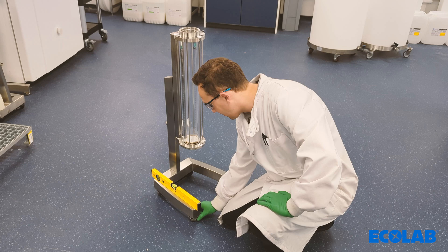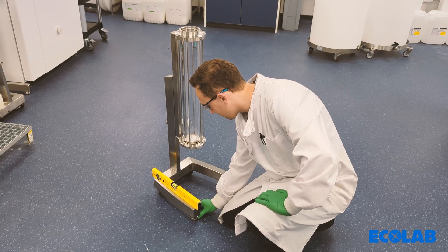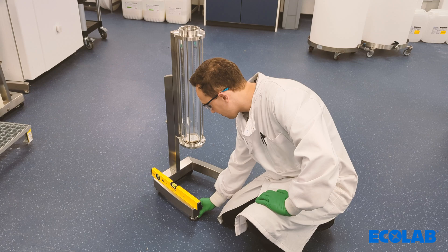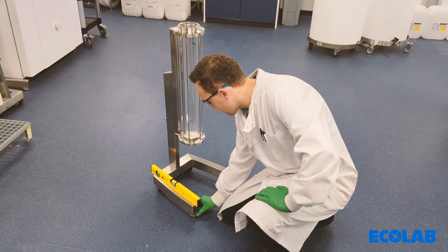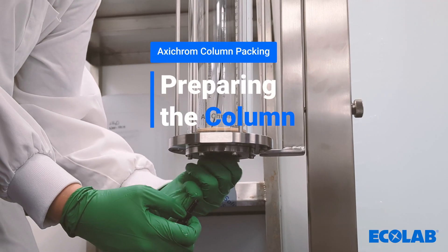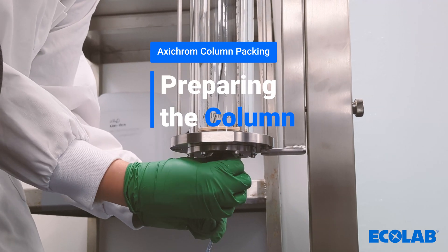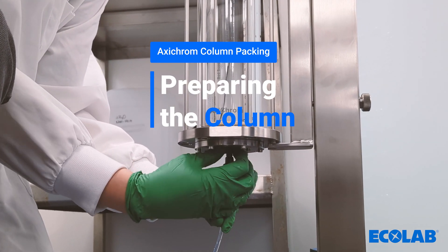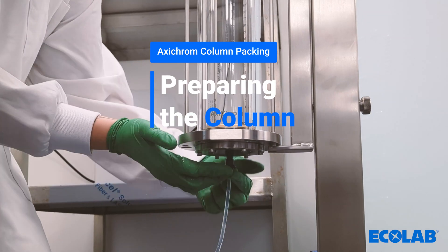The first step in preparing the column is to level the column. Prior to priming the column, ensure that the system is primed and no air is present in the lines. The bottom of the column can now be attached to the system and a low flow applied to add 1-2 centimeters of water to displace any air from the bottom frit.